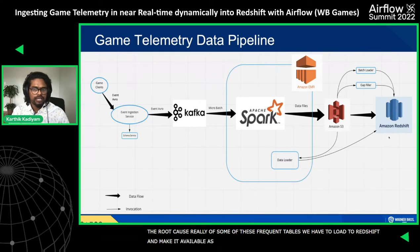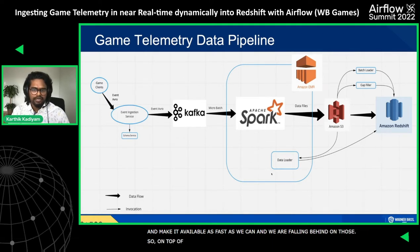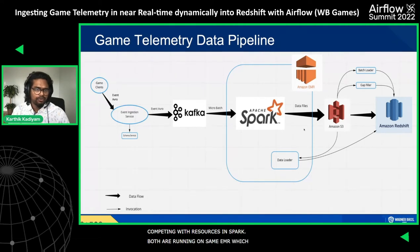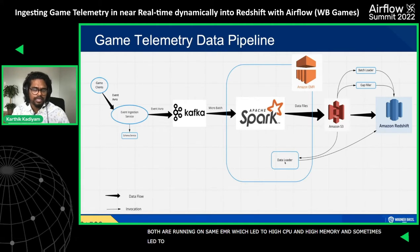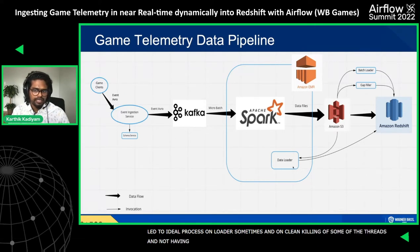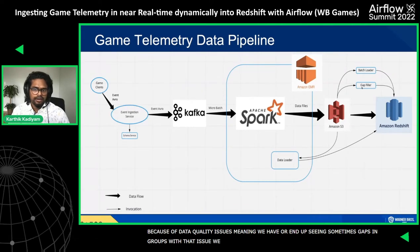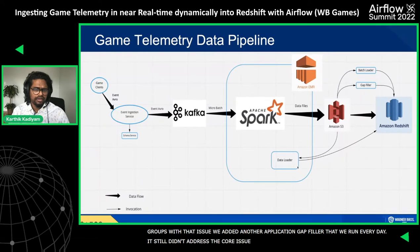We also had resource contention problems because the data loader and Spark were both running on the same EMR, leading to high CPU, high memory, idle processes on the loader, and sometimes unclean thread kills without transactional records. This caused data quality issues — gaps and dupes. We added a gap filler application running after midnight each day to remediate, but it still didn't address the core issue of data quality within a given day.